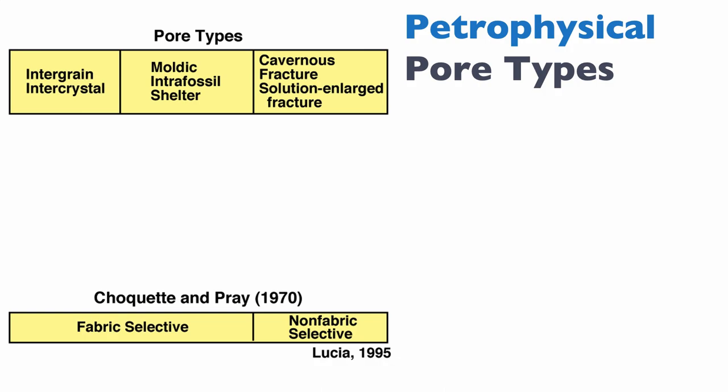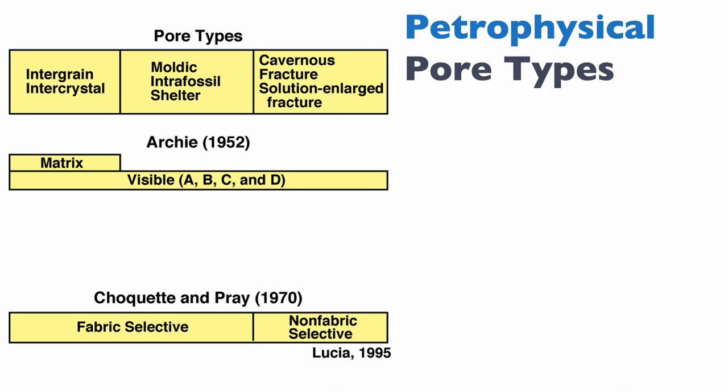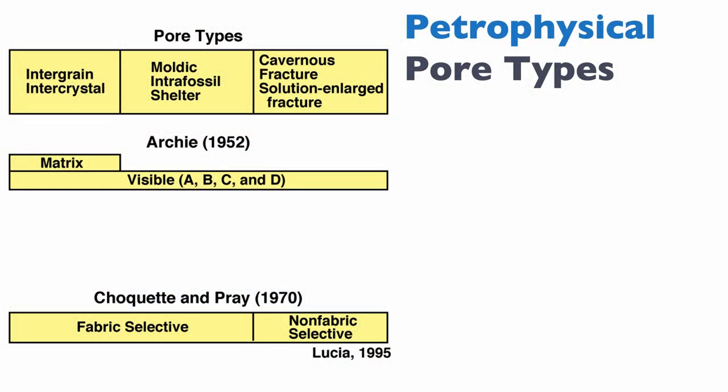The very first petrophysical classification came in 1952 by Archie. Archie recognized that in carbonates, in order to predict permeability from porosity, you had to separate the matrix from what is not the matrix — essentially VUGs. Any type of non-matrix porosity in Archie's classification is called a VUG, and he classified them as VUGs of type A, B, C, and D depending on their size and distribution. The logic is that matrix porosity allows relatively even flow, whereas VUGs need to flow through the matrix to produce permeability unless they're connected.